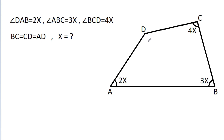In this video, we have been given that angle DAB is 2x, angle ABC is 3x, angle BCD is 4x, BC is equal to CD and is equal to AD, and we have to find x.